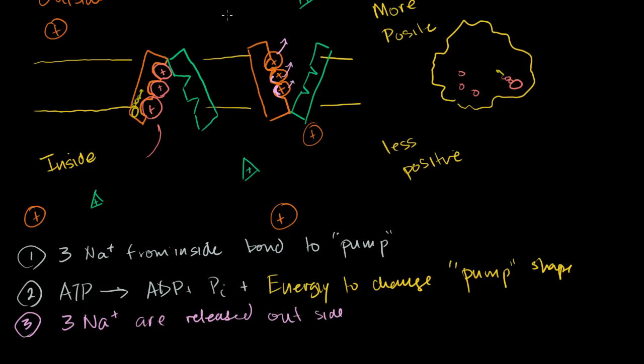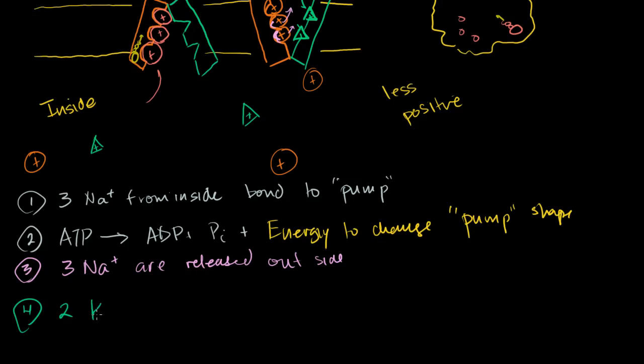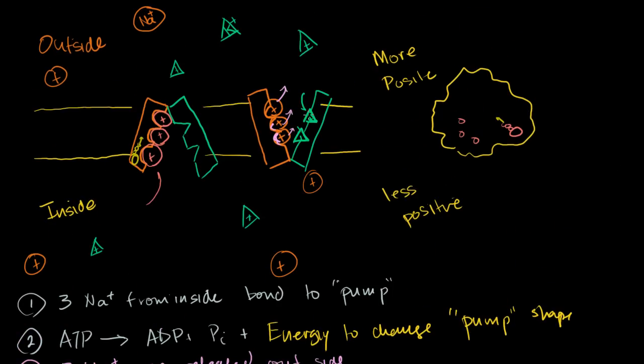Once it's in this configuration, we have all these positive ions out here. These positive ions want to get as far away from each other as possible. They'll be attracted to the cell itself because the cell is less positive on the inside. These positive ions, and in particular the potassium, can bond this side of the protein when it's in this activated configuration. So now, step four, we have two potassium ions bond to the activated pump or changed pump, or in its open form.